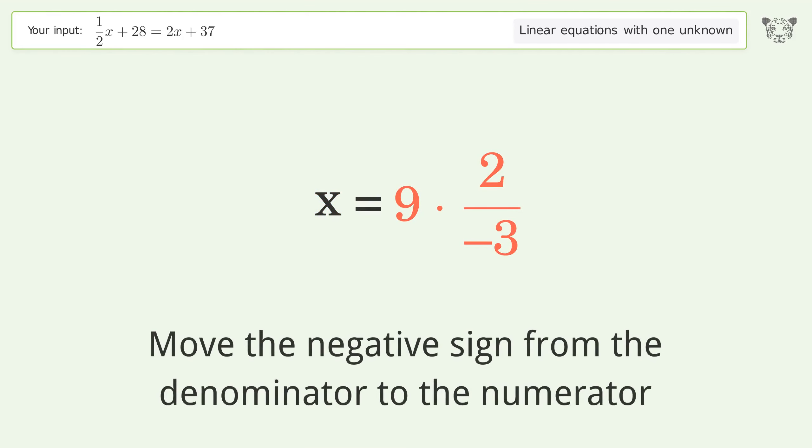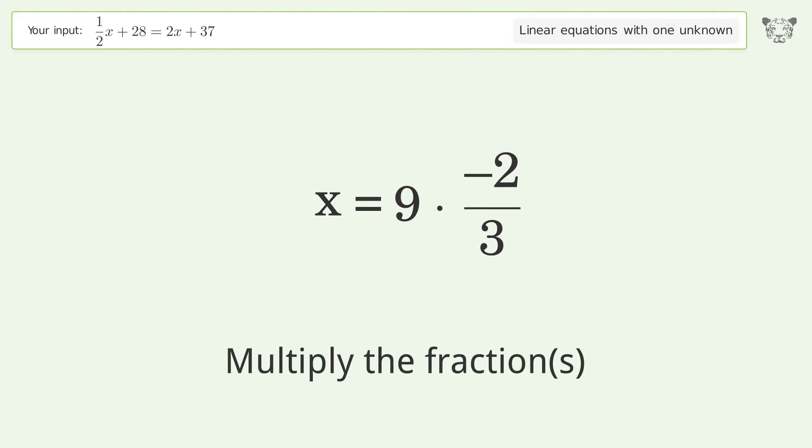Move the negative sign from the denominator to the numerator. Multiply the fractions. Simplify the arithmetic. And so the final result is x equals negative 6.